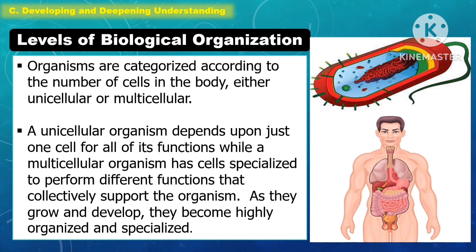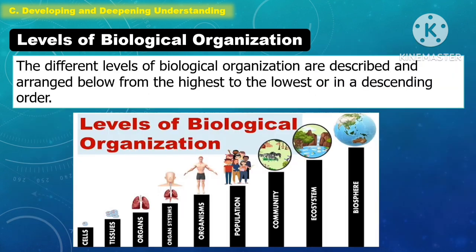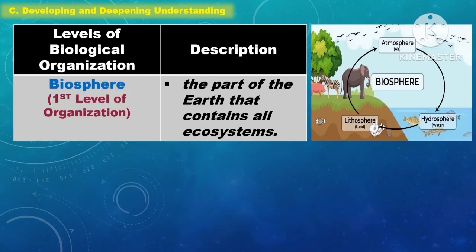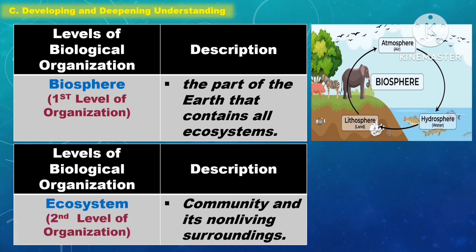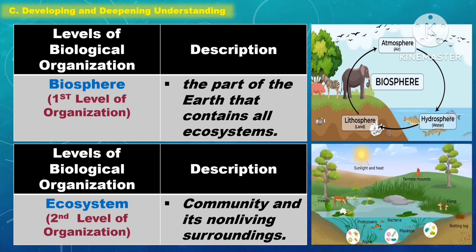As they grow and develop, they become highly organized and specialized. The different levels of biological organization are arranged from the highest to the lowest in descending order. The first level is the biosphere — the part of the earth that contains all the ecosystems. The second level is the ecosystem — a community and its non-living surroundings.